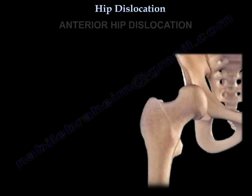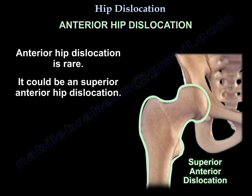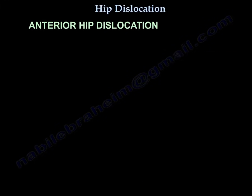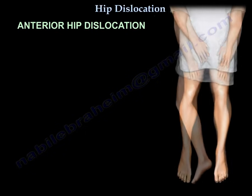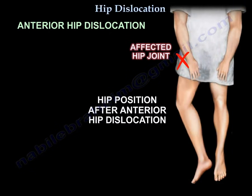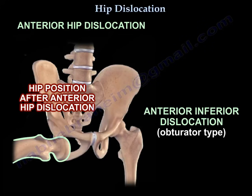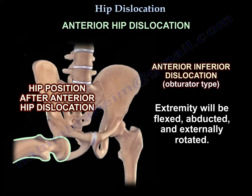In anterior hip dislocation, which is rare, the superior anterior type presents with the limb extended, adducted, and externally rotated. The anterior inferior hip dislocation, called the obturator type, presents with the extremity flexed, abducted, and externally rotated. Here is a normal position of the hip and the hip position after anterior hip dislocation.